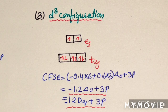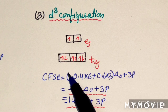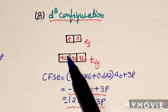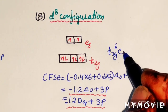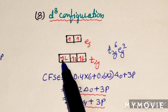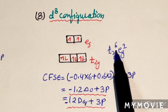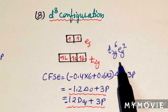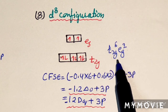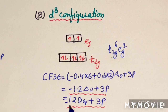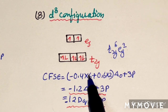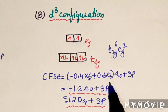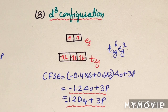For D8 configuration, regardless of how electrons are filled, the configuration is always T2G6EG2 — there is no high spin or low spin distinction. With 6 electrons in T2G and 2 in EG, and 3 paired electrons, CFSE = −1.2 delta O + 3P, or −12 DQ + 3P.